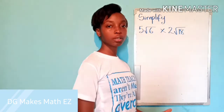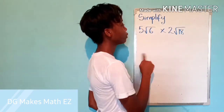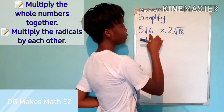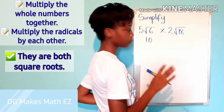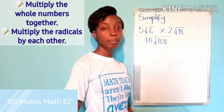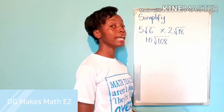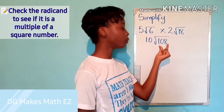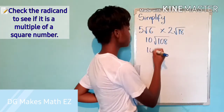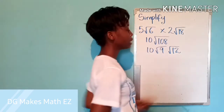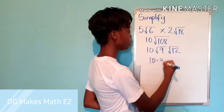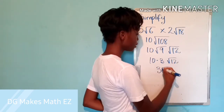For this question, we apply the rule about the product of two roots. Both roots have coefficients, so we work on the whole numbers first: 5 times 2 gives us 10. Now we multiply the roots — root 6 times root 18 gives us root 108. To determine whether you are done simplifying, ask yourself if there is any square number that is a factor of 108. Since 9 is a factor of 108 and 9 is a square number, we express this as 10 times root 9 times root 12. So we get 10 times 3 times root 12, which gives us 30 root 12.